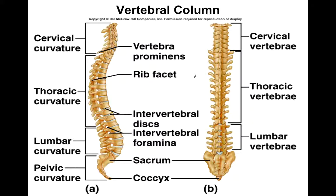The vertebral column is made up of different sections. We have the cervical vertebrae, numbered C1 through C7, superior to inferior. Then we have the thoracic vertebrae, T1 through T12. And the lumbar vertebrae are L1 through L5. Some people do have a 6th lumbar vertebra, which is not uncommon, especially for taller people.